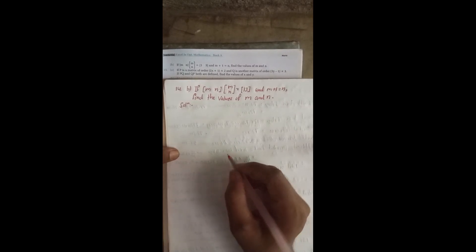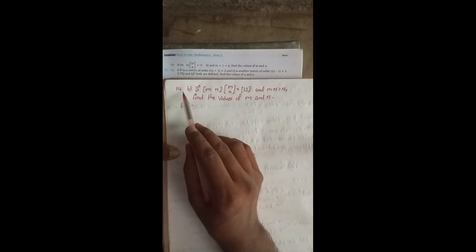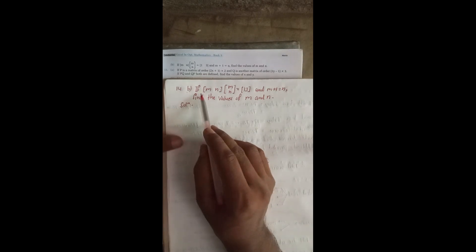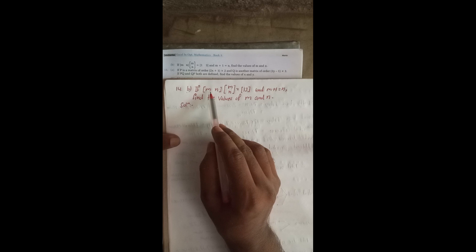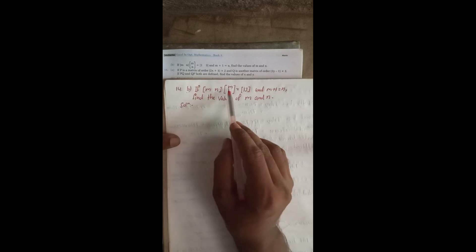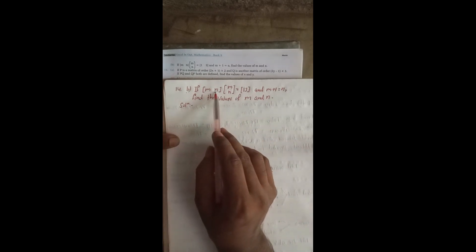Hi, welcome back to Bimalsarji's YouTube channel. Now I am going to solve problem 14B. If matrix MN is given in brackets, this is a column matrix. MN is equal to 13 and M plus 1 is equal to N. Find the value of M and N.